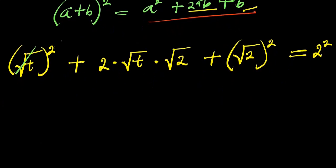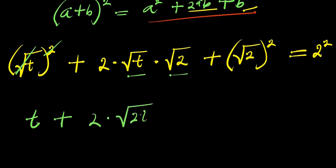The square root eliminates the square, so we have t. Root t times root 2 is root 2t, so we have 2 times square root of 2t. The last term cancels to give 2, and the right side equals 4.